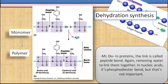In nucleic acids, it's phosphodiester bond, but that's not important. So make sure you know glycosidic linkage in carbohydrates and peptide bond in proteins.